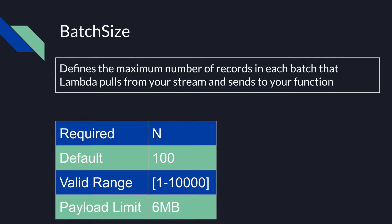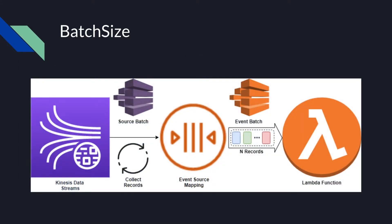The batch size parameter defines the maximum number of records in each batch that Lambda pulls from your stream and sends to your function. Lambda passes all of the records in the batch to the function in a single call, up to the payload limit for synchronous invocation which is 6 MB. It's not a required parameter — the default is 100 and the valid range is 1 to 10,000. The event source mapping collects records from a specific shard into a batch and only then invokes your Lambda function synchronously.